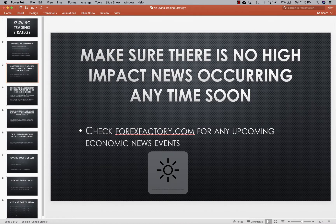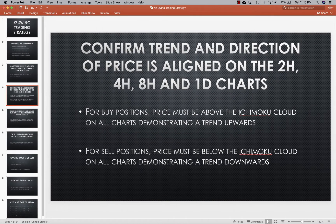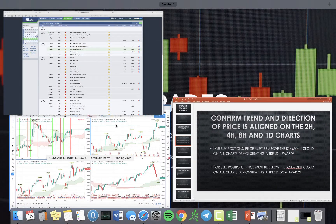After you determine that there's no high-impact news, you can confirm the trend and direction of price and make sure it's aligned on the two-hour, four-hour, eight-hour, and daily charts. For buy positions, price must be above the Ichimoku cloud — this demonstrates that the trend is moving upwards. For sell positions, price must be below the Ichimoku cloud, demonstrating that the trend is moving downwards.